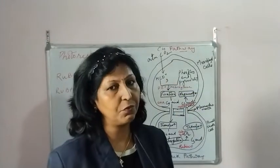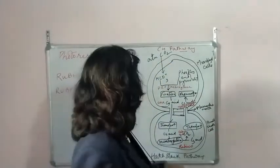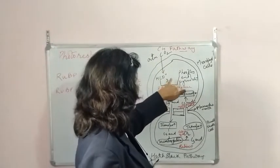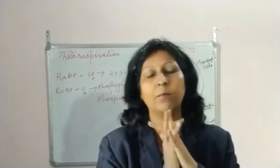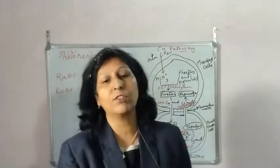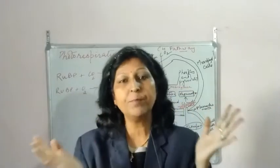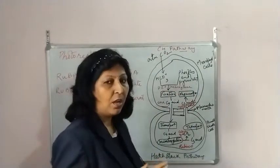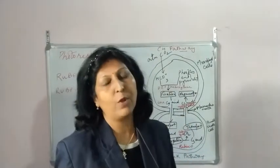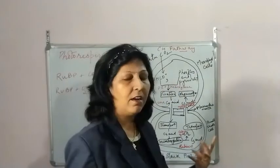Phosphoenol pyruvate is a three-carbon compound. CO2 (or HCO3⁻) combines with it to form a C4 acid. This pathway is known as the C4 pathway or Hatch and Slack pathway — both names refer to the same cycle. In exams you may be asked to depict the C4 pathway or draw a labelled diagram for the Hatch and Slack pathway.